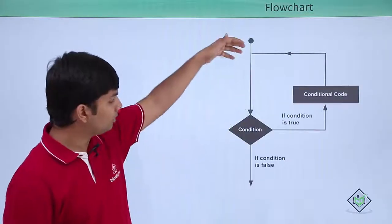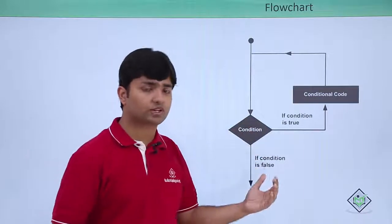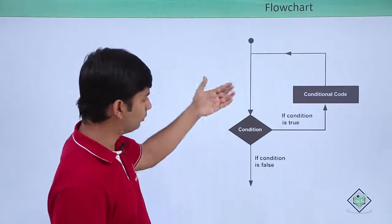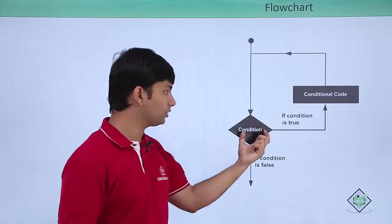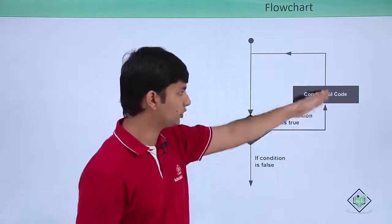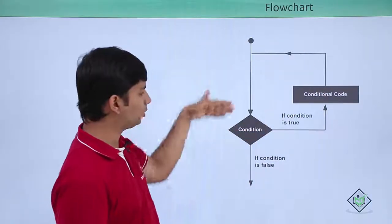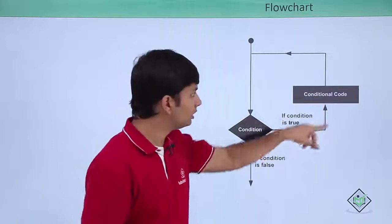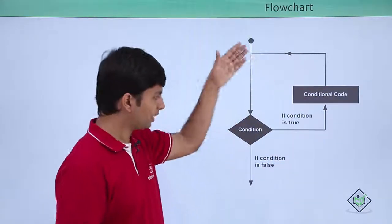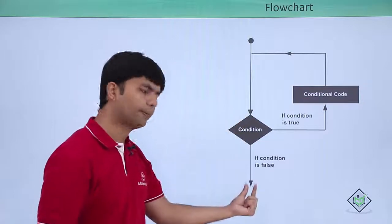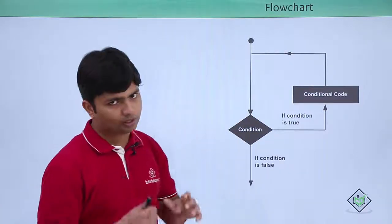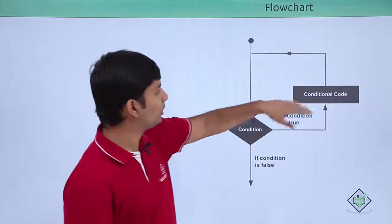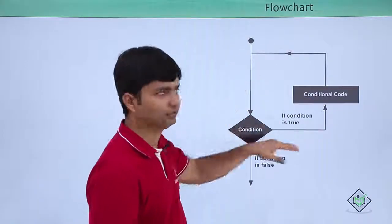Here is the basic idea of how iteration statements or loops get executed. This is the control flow — there must be a condition. If the condition is true, we execute the conditional code and control comes back to the condition. Unless and until the condition returns true, the loop keeps executing. As soon as the condition is false, it gets terminated. If there is any logical error, you may write an infinite loop which will not be able to exit the iteration.